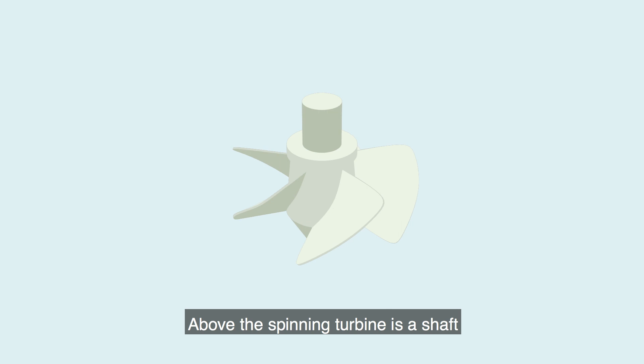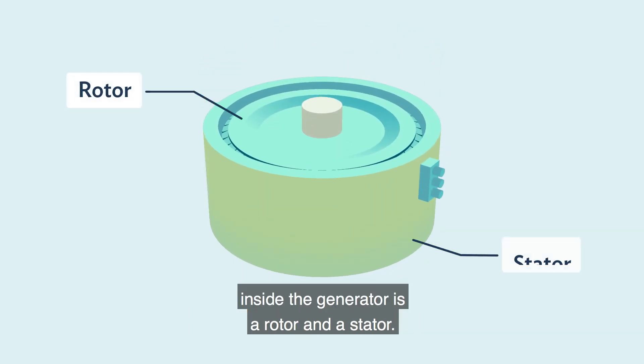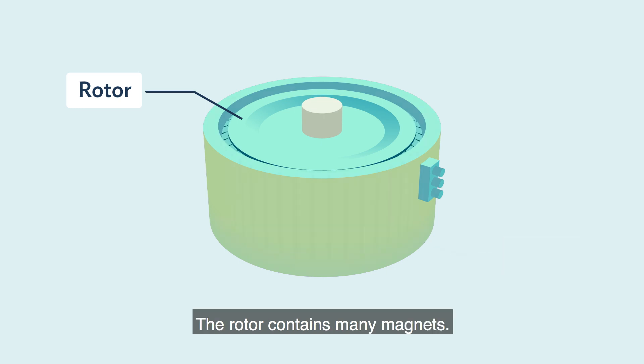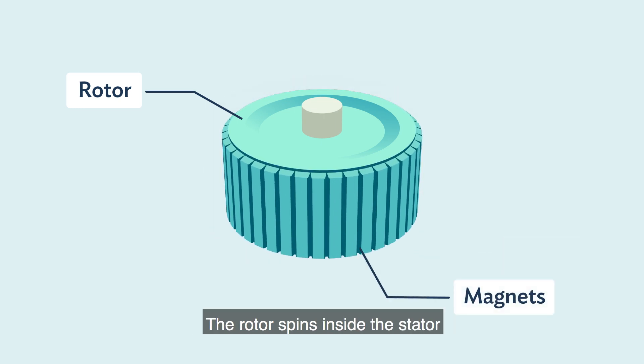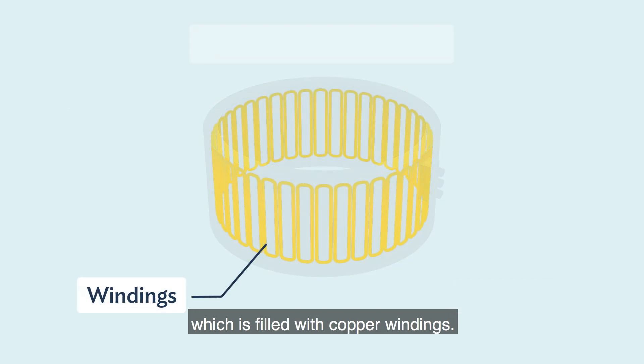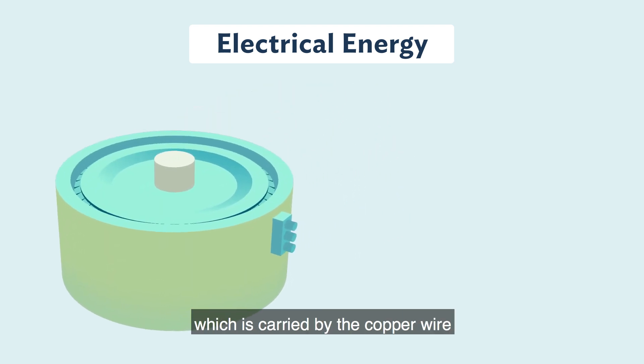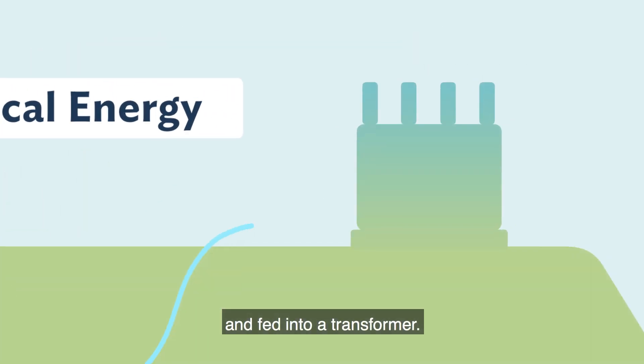Above the spinning turbine is a shaft, which connects to the generator. Inside the generator is a rotor and a stator. The rotor contains many magnets. The rotor spins inside the stator, which is filled with copper windings. Now the mechanical energy is transformed into electrical energy, which is carried by the copper wire and fed into a transformer.